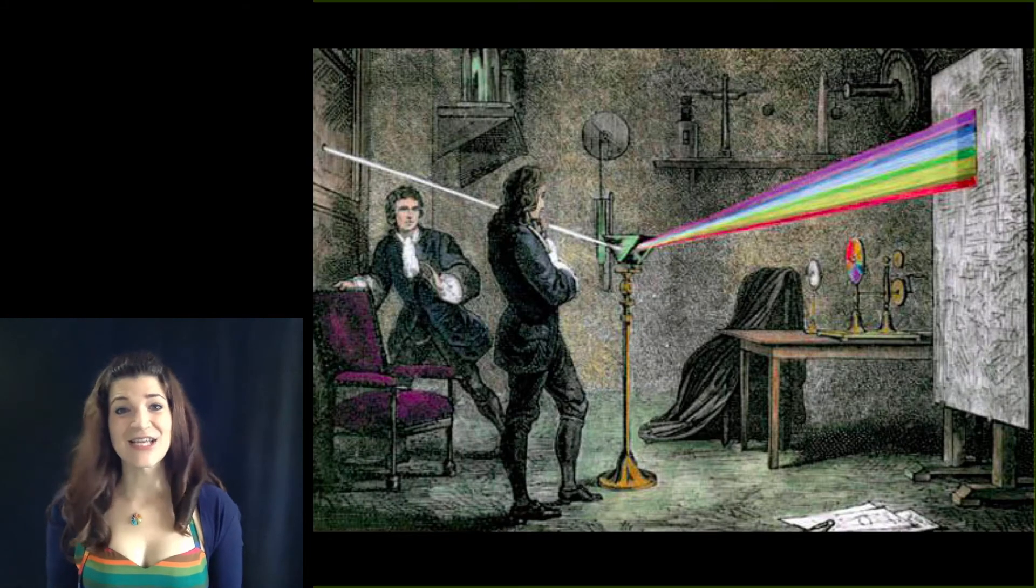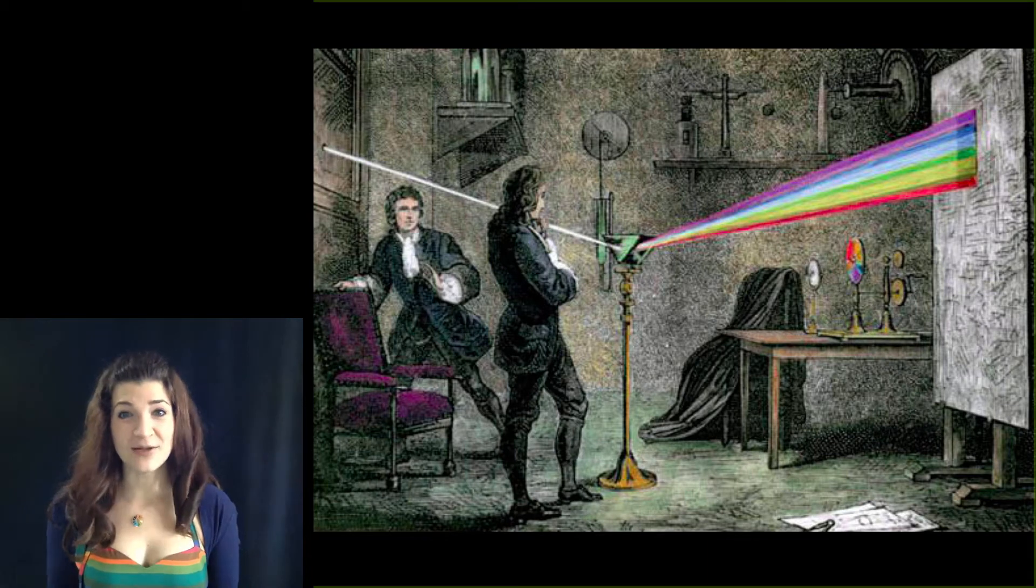The fact that sunlight contains all wavelengths is what made it possible for Newton to see multiple wavelengths of light refracted by his prism.